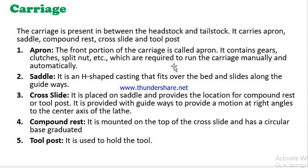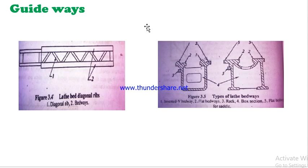The saddle is an H-shaped casting that moves along the guideways in the longitudinal direction. The cross-slide is placed on the saddle and moves in the transverse direction, perpendicular to the axis. The compound rest holds the cutting tool and can be tilted at angles. The tool post is used to firmly hold the cutting tool.